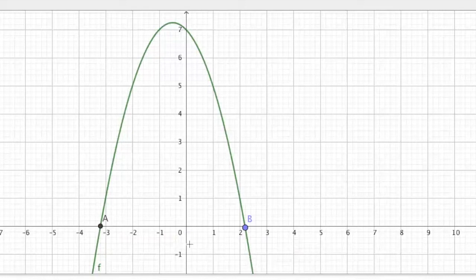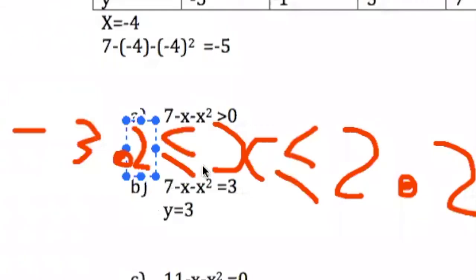So, between these two values, you have y being positive. Now, I'm going to round off negative 3.19 to negative 3.2. So, the values of x when y is greater than or equal to 0 is x is greater than or equal to negative 3.2, but lesser than or equal to 2.2.